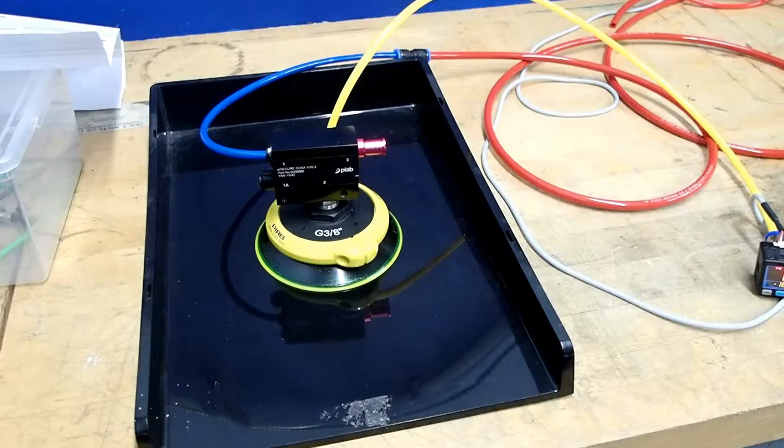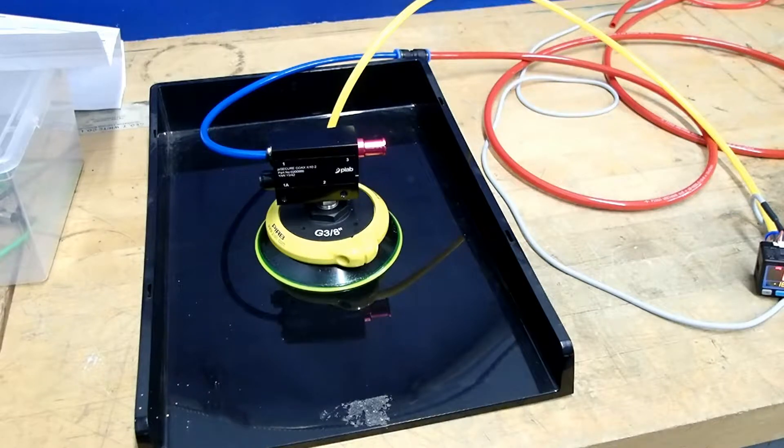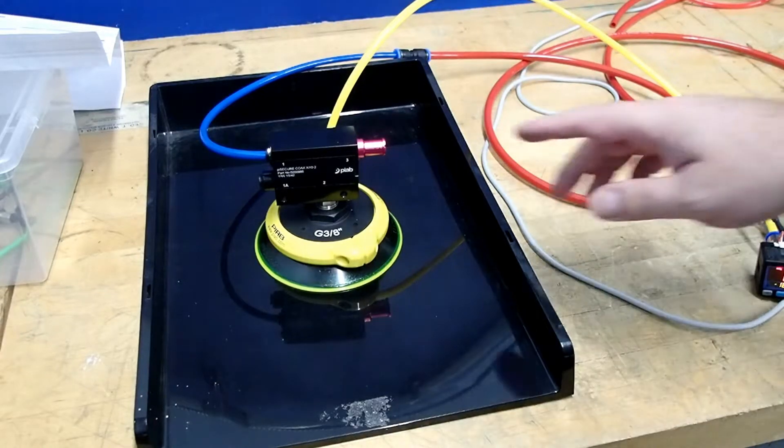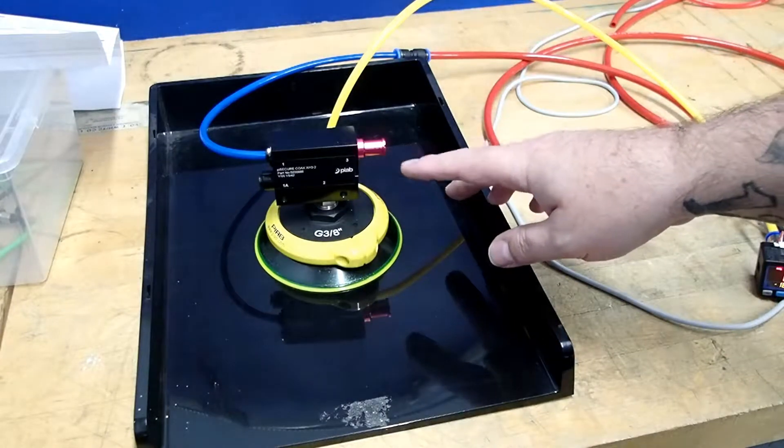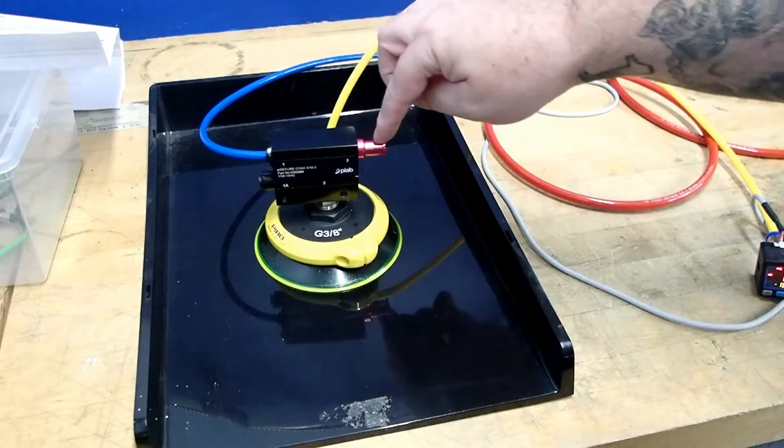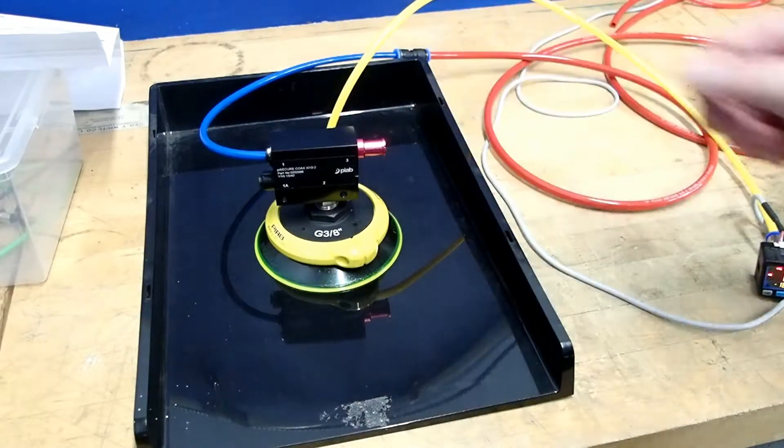Today we have a really excellent product to show you—it's the Pi Secure Coax from Piab. Some of the features and benefits of this product are as follows. It's going to utilize a two-stage coax mini XI-10-2 ejector, which is going to give you great vacuum, and as you can see, that's obviously built right in. There's your exhaust cap there.